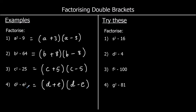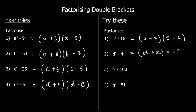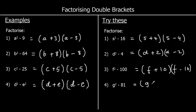Okay, four for you to try — pause the video and give them a go. These are all the difference of two squares, so we have the same thing in both brackets, but one with a plus and one with a minus. So the first one is (s+4)(s−4). We've got (d+2)(d−2). Then (f+10)(f−10). And (g+9)(g−9).